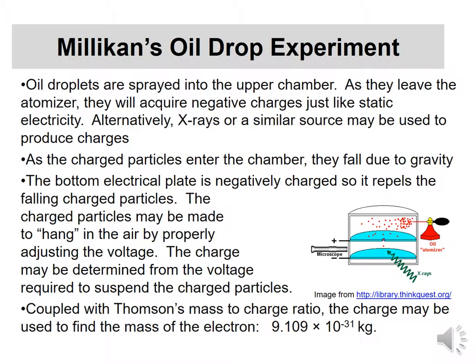Millikan did this experiment and found there were multiples of a charge — some particles might pick up one, two, or three negative charges — and he found what the smallest common charge was: approximately 1.6 × 10⁻¹⁹ coulombs. Once he knew that charge, and because Thomson had a mass-to-charge ratio from before, he could figure out the mass of the electron — which turns out to be 9.1 × 10⁻³¹ kilograms, an incredibly small number. So now we have common subatomic particles, the electron, a hunch there are positive particles that vary in mass, and an idea of the mass and charge of the electron.